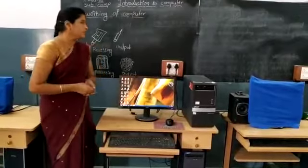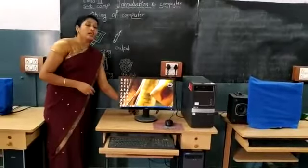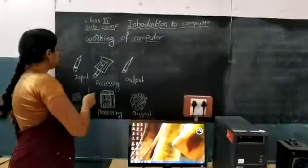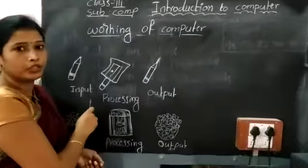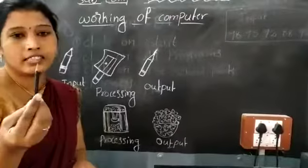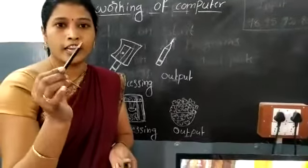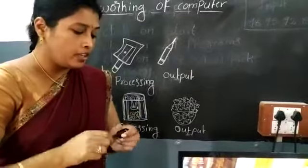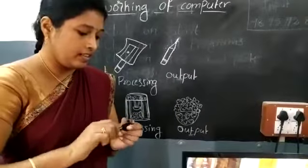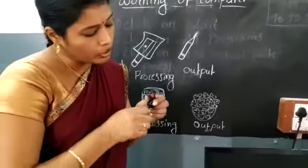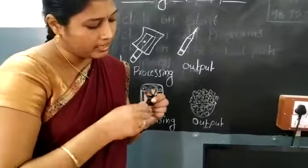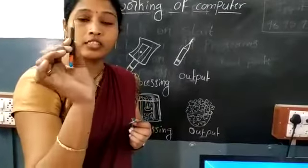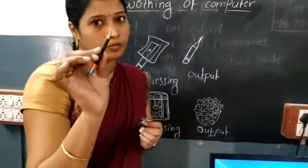For example, see here we have a blank pencil. The blank pencil is the input. We want to sharpen it — that is the processing. So we get a sharp pencil, and that is the output.